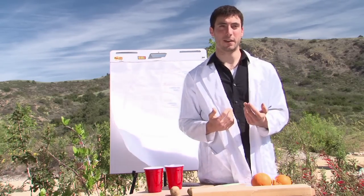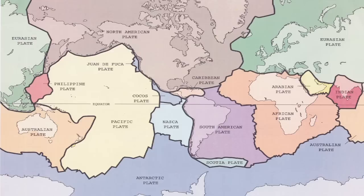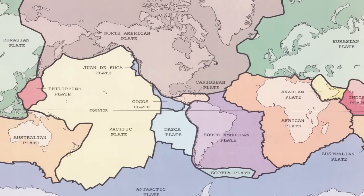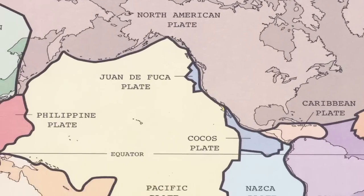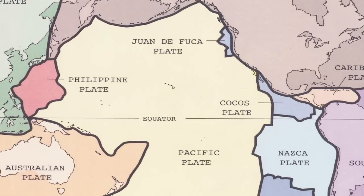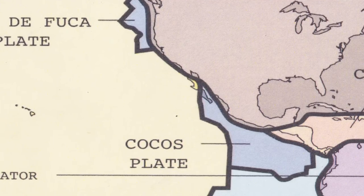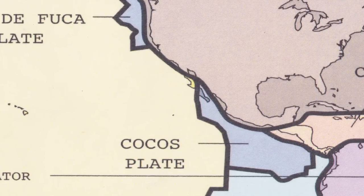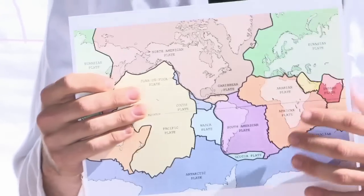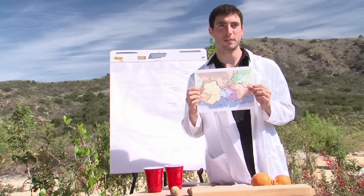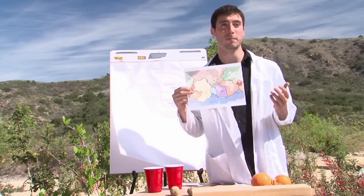One good way to explain plate tectonics to students is to show them a map of the actual plates on planet Earth. Here you can see the North American plate and the outline of North America, and it meets with the Pacific plate — the boundary that much of Southern California sits on. Los Angeles is on the Pacific plate, which is moving against the North American plate, and as they slide against each other that causes earthquakes. You can have students cut out the plate boundaries and make a puzzle out of the maps.